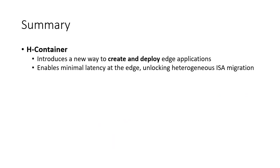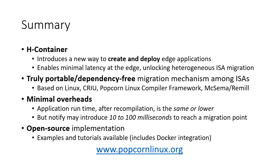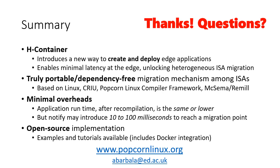In a third stage, we run the same experiment with Edge Container, which enables migration between x86 and ARM, thus obtaining the blue curve of minimal latency in the graph. In summary, Edge Container introduces a new way to create and deploy edge applications that enables latency-sensitive applications to fully leverage edge proximity to client devices, even with servers of different ISA. It is a truly portable and dependency-free container migration mechanism, based on Linux, CRIU, the Popcorn Linux compiler framework, and McSema. Edge Container adds minimal overhead: the transpiler may even speed up the original application, and the runtime has 10 to 100 milliseconds overhead to reach a migration point. Our Edge Container implementation is open source and accessible via the Popcorn Linux website, which includes examples and tutorials with and without Docker integration. Thanks for listening.